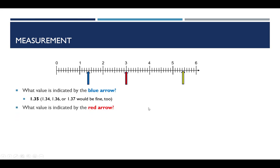Seeing that I'm making an estimate, I would say any of these values would be acceptable. 1.35 would be my initial guess, but I could see any of these as being reasonable estimates. How about the red arrow? To me, it looks like it's right on the line. And again, we can't say it's exactly 3 — it's an estimate. We've already decided that with this set of markers, we have to always go to the hundredths place. So the best answer would be 3.00 — that last zero is telling me that's where I estimated, at the hundredths place.